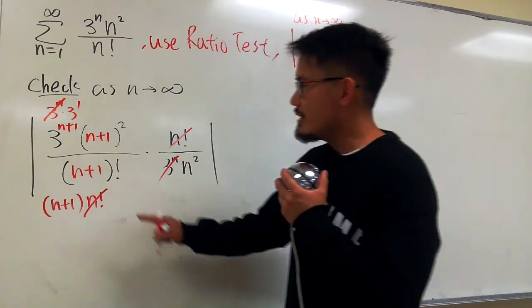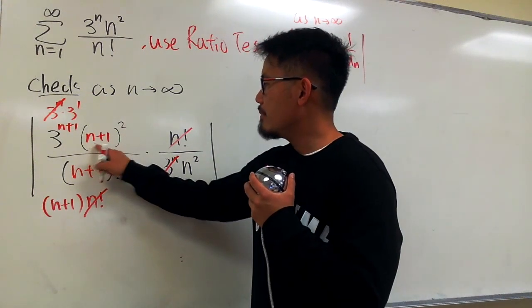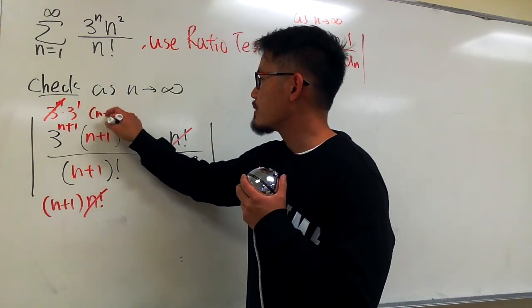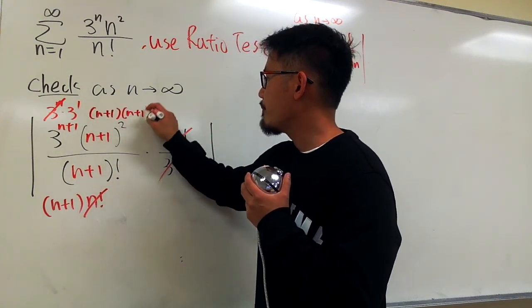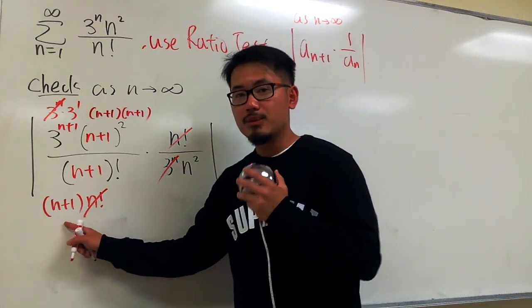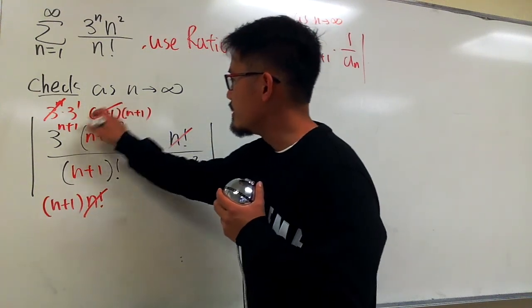And then we see that here we have (n+1) squared, which is (n+1) times (n+1). We have another (n+1) in the denominator, right? So we can cancel.